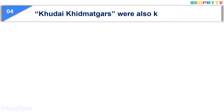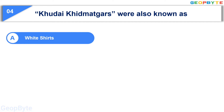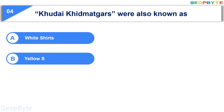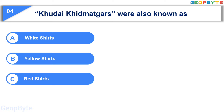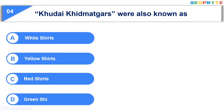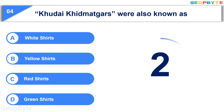Moving to the fourth question: Khudai Khidmatgars were also known as — Option A: White Shirts, Option B: Yellow Shirts, Option C: Red Shirts, Option D: Green Shirts. Your time starts now. Your time is up and the correct answer is Option C: Red Shirts.